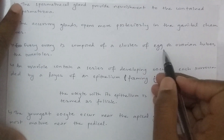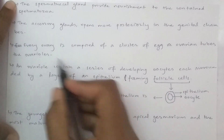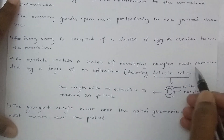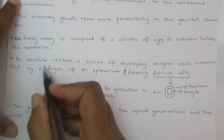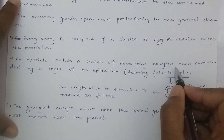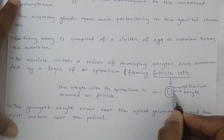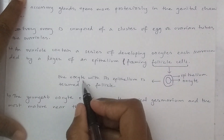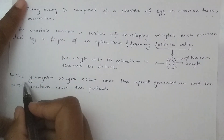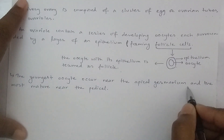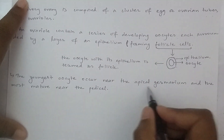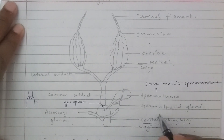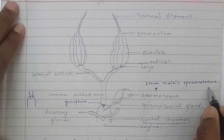Every ovary is composed of a cluster of egg tubes, called ovarioles. An ovariole contains a series of developing oocytes surrounded by a layer of epithelium forming follicle cells. The youngest oocytes occur near the germarium and the most mature oocytes occur near the pedicel.